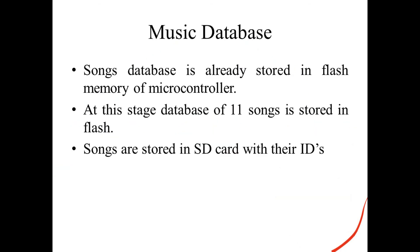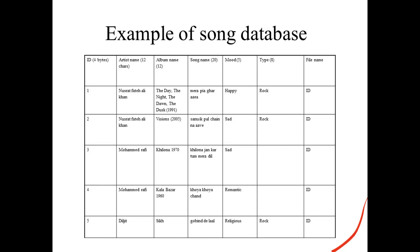Music database: We have assumed that the database is already stored in the microcontroller, and at this stage we are using 11 songs. Songs are stored with their song IDs. In the example database, a song is saved with an ID, artist name such as Nusrat Fateh Ali Khan, its album name, song name, mood such as happy, and type such as rock.